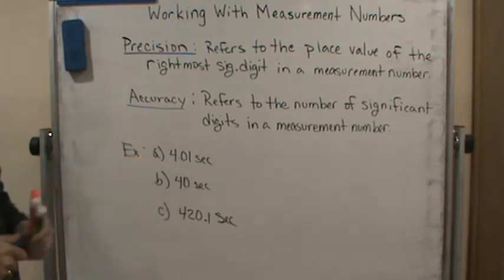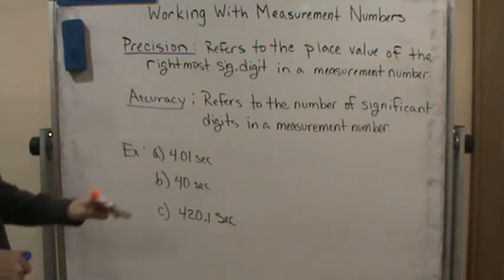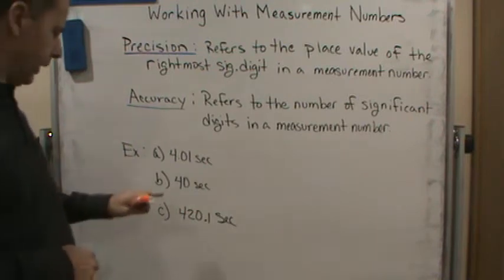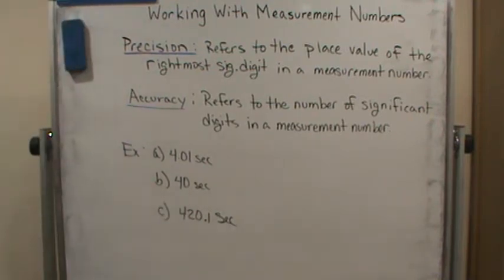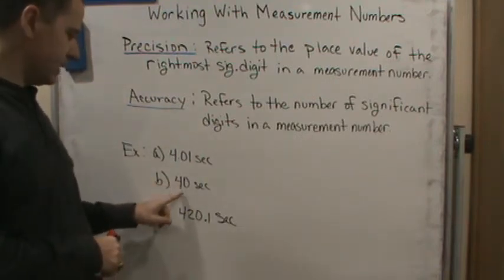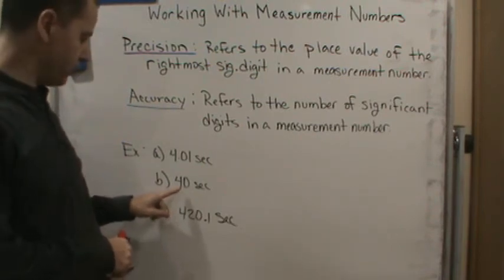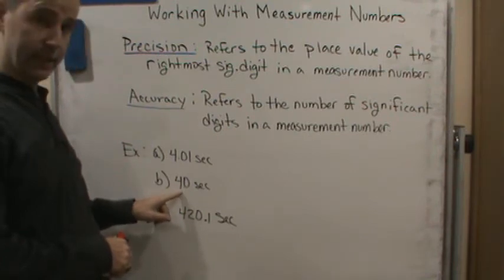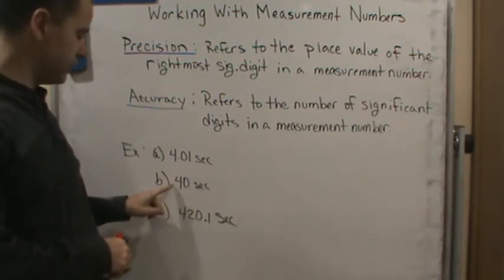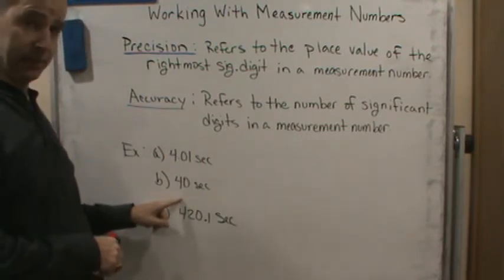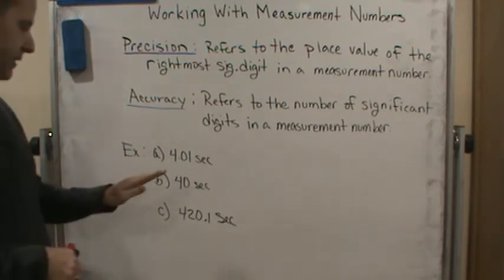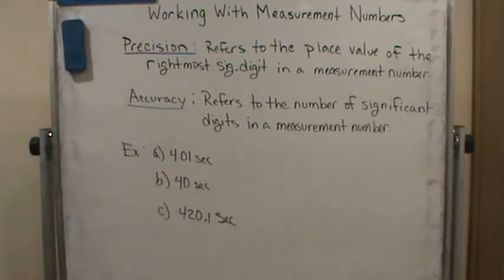For B, the zero is not significant, so this would be precise to the nearest ten seconds — because we're measuring out to the rightmost significant digit, which is the four. So we say this is precise to the nearest ten seconds, and as far as accuracy goes, this is accurate to one significant digit.